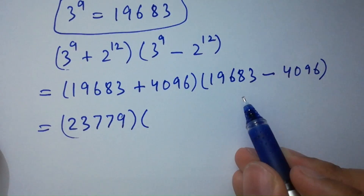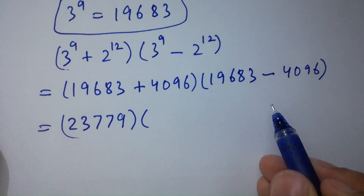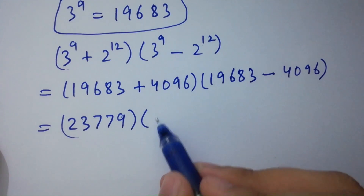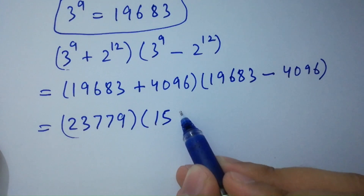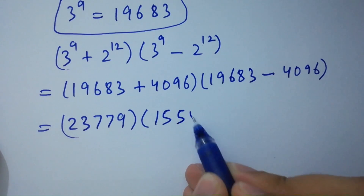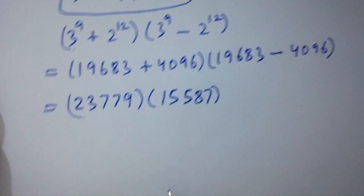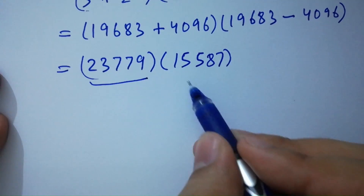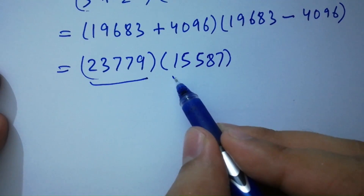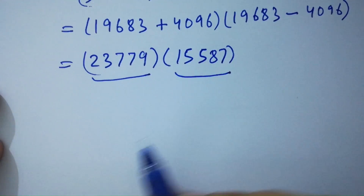And 19,683 minus 4096 equals 15,587. So we can see 23,779 is the larger number and 15,587 is the smaller number.